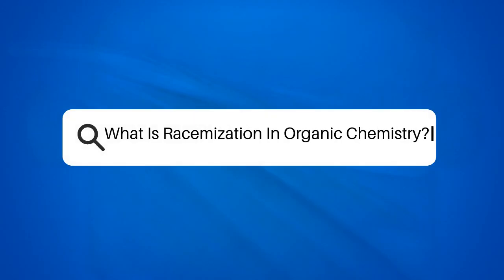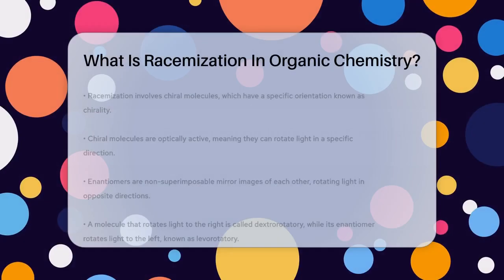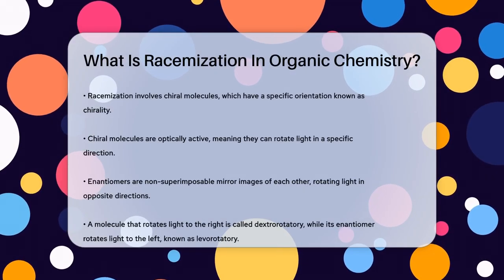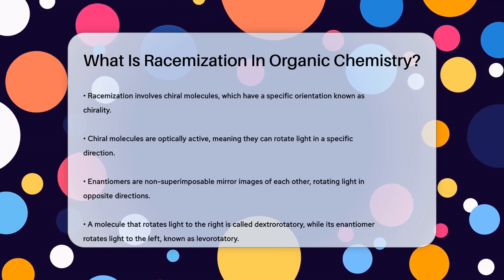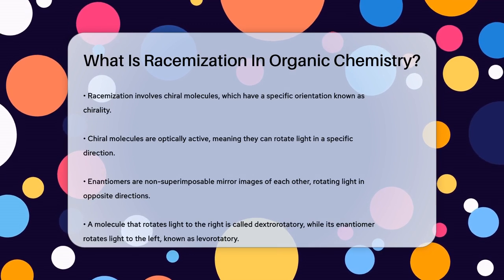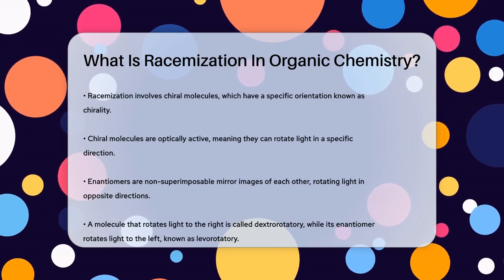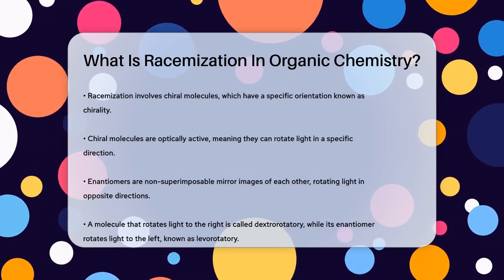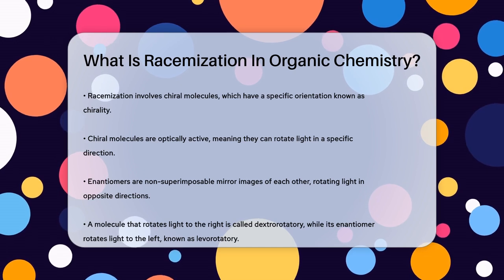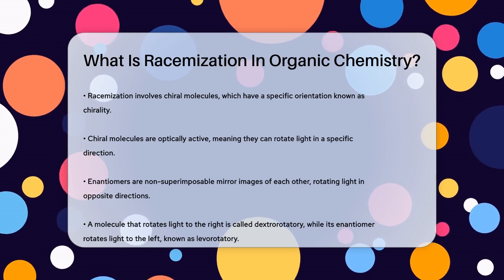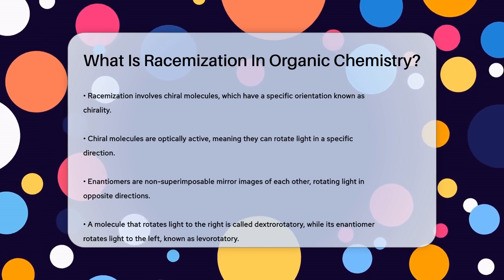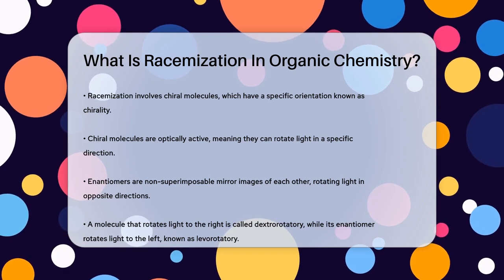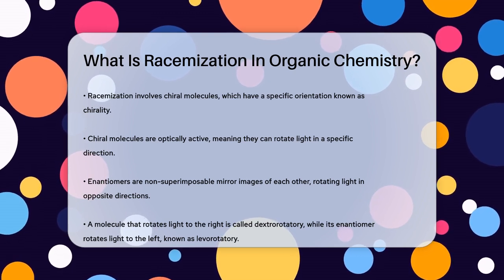What is racemization in organic chemistry? Imagine you have a pair of gloves, one for the left hand and one for the right. In organic chemistry, molecules can be like these gloves where they have a specific handedness or orientation in space. This is known as chirality. Now, let's talk about what happens when these chiral molecules undergo a process called racemization.